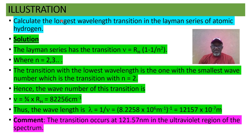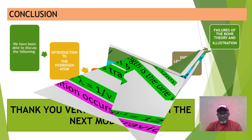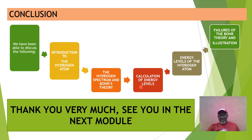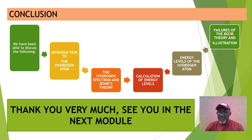There is an illustration — calculate the wavelength. It's a very simple one; go through it and you'll see what we did. Thank you very much. We've come to the end of Module 1. We've done the introduction to the hydrogen atom, the hydrogen spectra and Bohr's theory. We looked at calculation of energy levels, wavelengths, wave numbers, and spectral transitions. We also looked at energy levels of the hydrogen atom, the Lyman series, Balmer series, and so on. Then we looked at the reasons for the failure of the Bohr theory and an illustration. Thank you very much. I hope you enjoyed the class. See you in the next class.